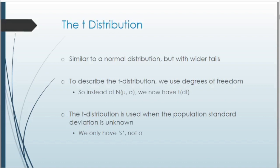Whenever we are discussing hypothesis testing for one population mean, the test statistic we're working with is known as the t-test statistic, which follows what is called a t-distribution. A t-distribution is pretty similar to a normal distribution, but depending on the sample size we're working with, it might have wider tails. To describe the t-distribution, we use degrees of freedom. For a normal distribution we label it with two parameters — the mean and standard deviation — but for the t-distribution we use just the one parameter, degrees of freedom. We use the t-distribution when the population standard deviation is unknown, and instead we have an estimate, the sample standard deviation, denoted by s rather than sigma.